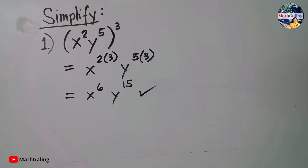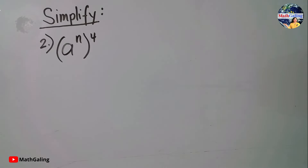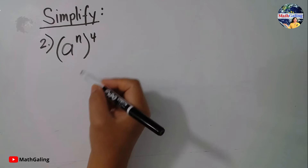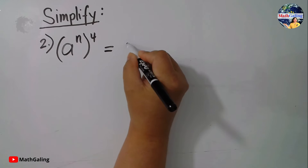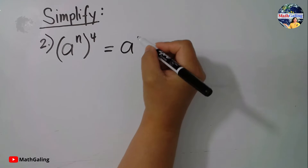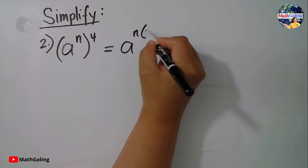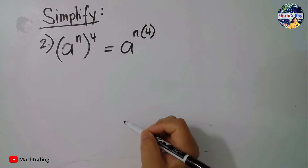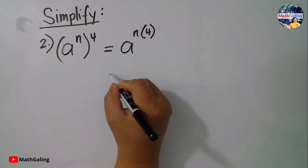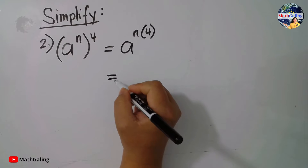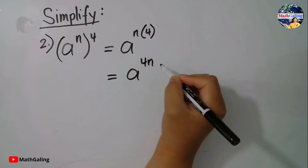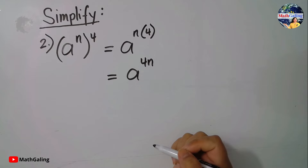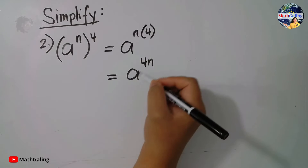For number 2, a to the n is being raised to the fourth power. We copy the base, and then we have n times 4. A lot of times we write the number first, so it's going to be a to the 4n.